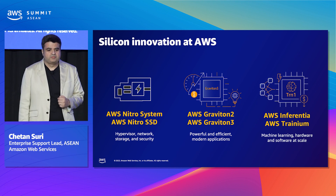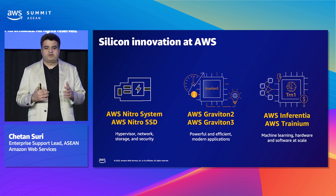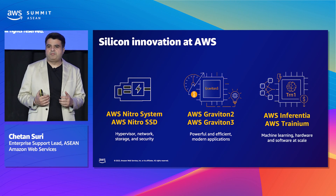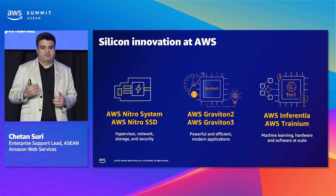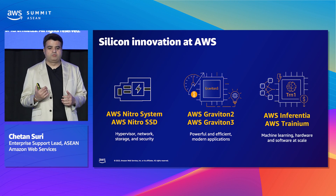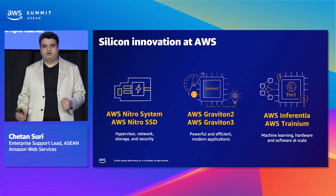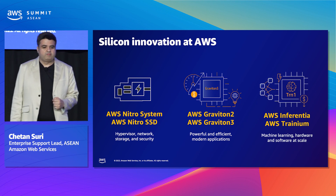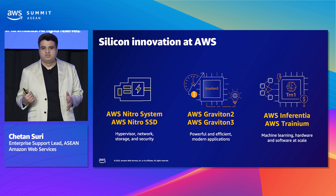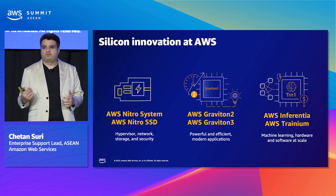AWS Inferentia provides high performance at the lowest cost for deep learning inference applications, delivering up to 2.3 times higher throughput and up to 70% lower cost per inference. And Graviton instances — the focus for today's session — are custom-built 64-bit ARM-based processors by AWS, designed to deliver the best price performance for your compute workloads.